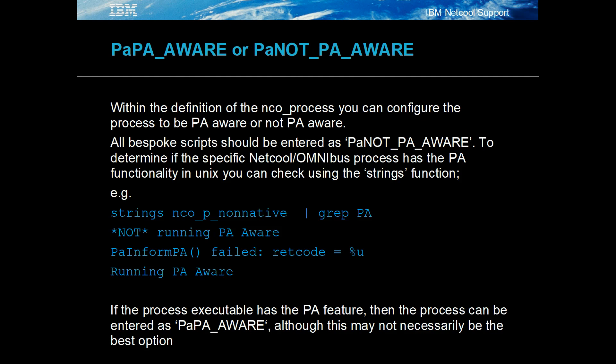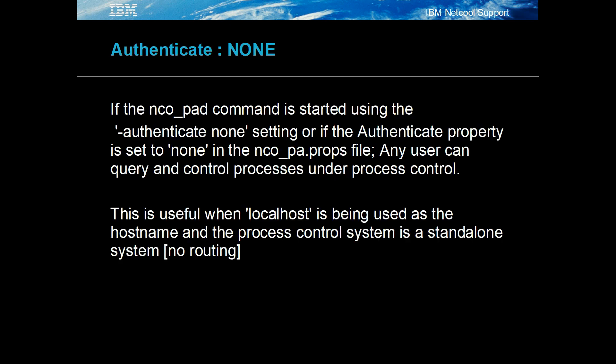PA_not_PA_aware is used for scripts and processes that are unaware of the process control process. The Unix strings command can be used to check a Netcall Omnibus binary to see if it is PA aware or not. NCO_PAD can be run with the minus authenticate none option, which disables the need to use authentication when running commands against the nco_pad process. However, the user still needs to be a member of the nco admin group. This is useful where the nco_pad process is being used locally on a secure system.